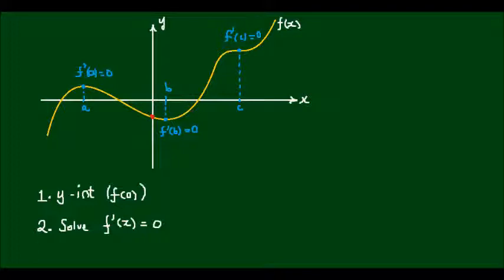The next step is to determine the nature of each critical or stationary point. And there are three possibilities. We can have a local minimum, a local maximum, or a point of inflection.